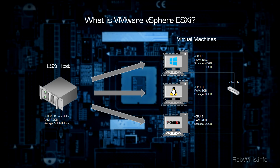On the right-hand side we have three virtual machines running on top of this physical hardware. There's a Windows machine with four vCPUs, 12 gigabytes of RAM, and multiple disks. Next there's a Linux machine with three vCPUs, 8 gigs of RAM, and 60 gigs of storage. And lastly there's a PFSense machine with two vCPUs, 4 gigabytes of RAM, and 20 gigabytes of storage, acting as our firewall and IDS detection system.